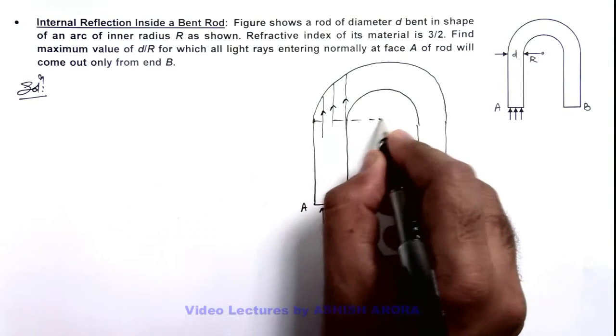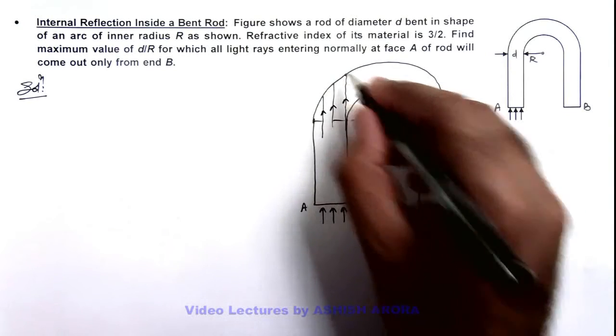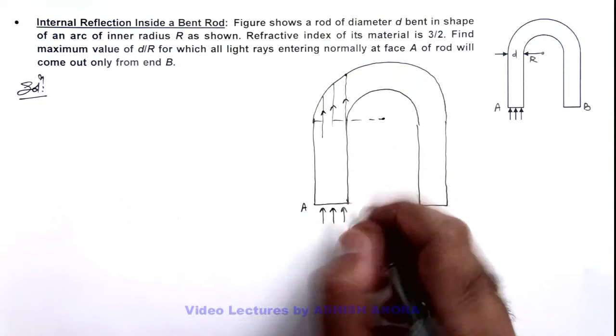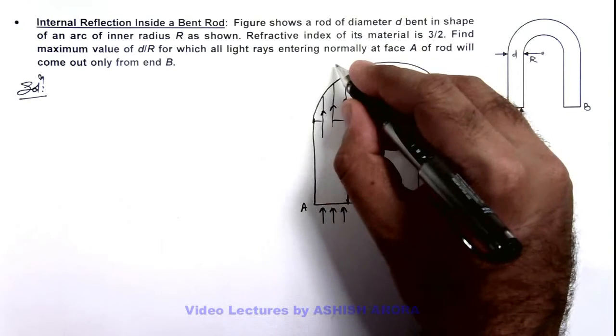And from this point here we can see, this ray which is coming at the inner surface or grazing along the edge of the inner surface of this rod.